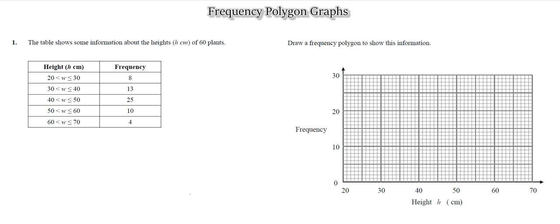From 20 to 30 centimeters there are 8 plants. Likewise, from 30 to 40 centimeters we have 13 plants, 40 to 50 is 25. Now if we were to present and draw this information as a frequency polygon, how do we do it?